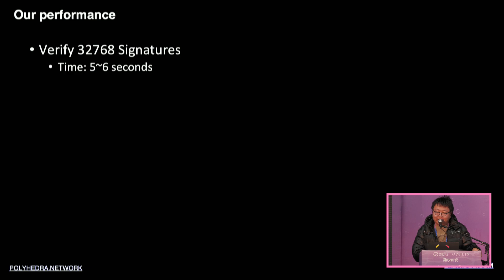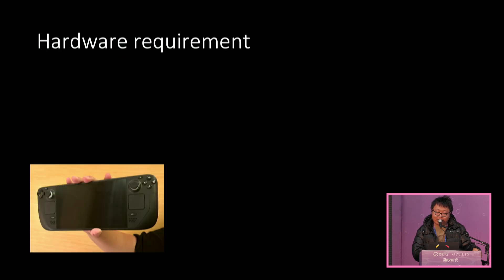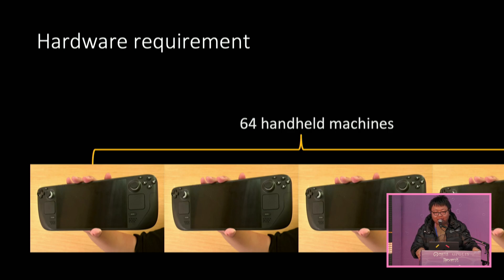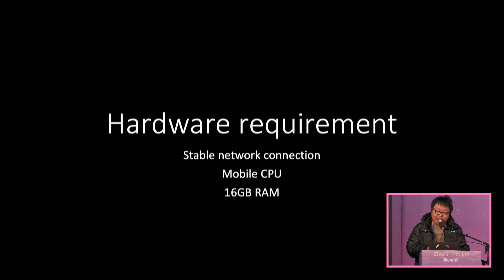Let's talk about decentralization. We did an experiment on verifying 30,000 signatures, and the result is pretty impressive — we only take five to six seconds to do that. The hardware requirement is 64 handheld machines, globally distributed. In the experiment we just connected to the same Wi-Fi, but we observed that data transmission is very low and we believe it's possible to globally distribute these machines. This could enable a new paradigm where validators purchase very cheap machines and join the network to collaboratively do proving.